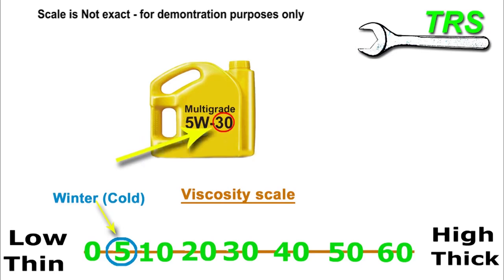But there's another number here representing this oil, and that's the 30. What this number is saying is that this oil also acts like a viscosity of 30, which as we can see on the scale is a medium viscosity.